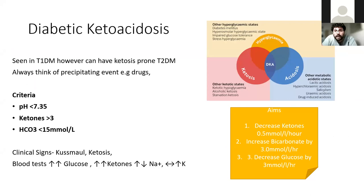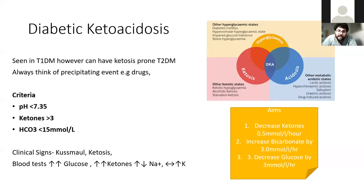The criteria for diagnosing DKA are based on pH — it has to be acidotic, so less than 7.35. It has to be with raised ketones, say over 3, and a low bicarbonate, which reflects the acidemia that is occurring.